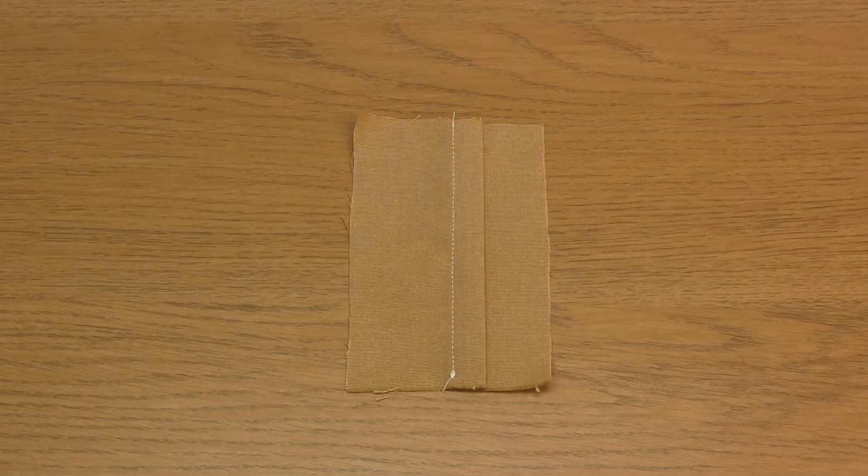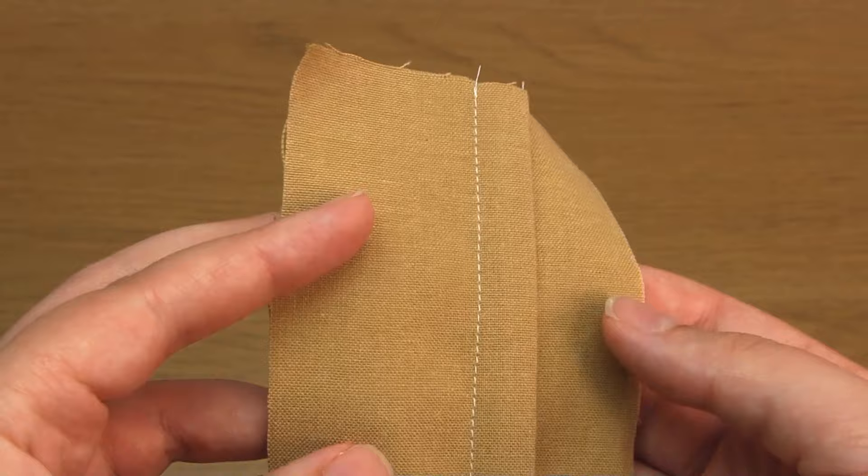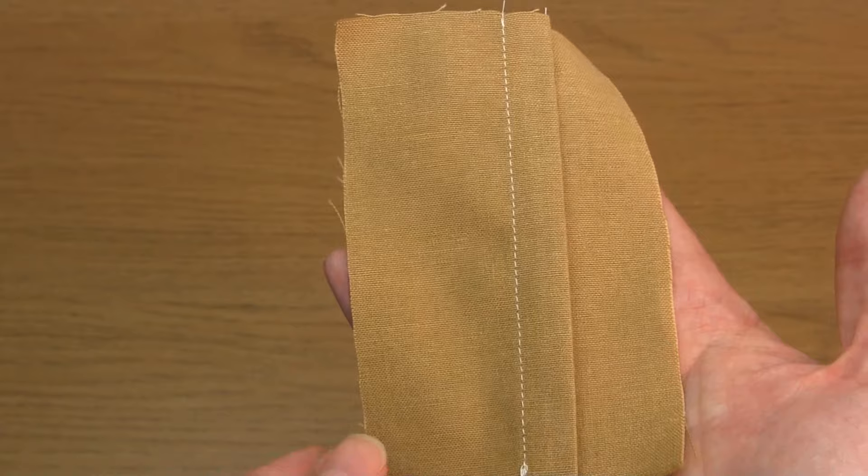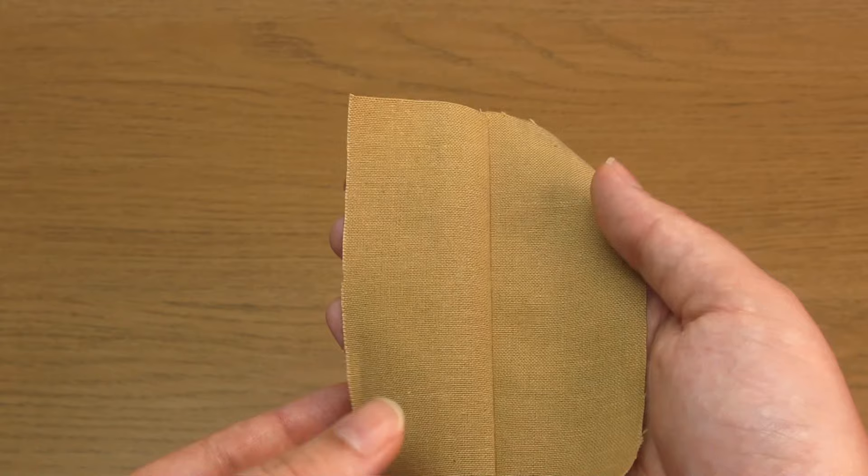As you can see, this method created exactly the same seam as method one did. The only difference is that this method didn't require trimming off a quarter of an inch of fabric. So where you would need to add one inch of seam allowance for method one, you would only need to add three quarters of an inch of seam allowance for method two.